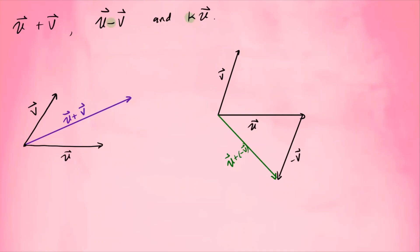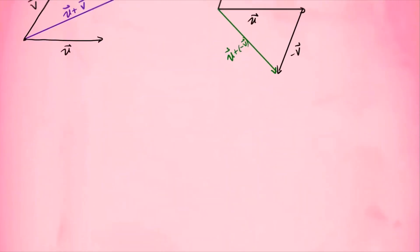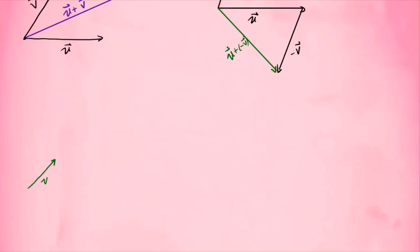The last concept is a scalar k times vector u, which elongates the vector. If k is a positive number like 5, it makes the vector bigger. If k is a small fraction, you can also make it smaller — for instance, 1 over k times vector u. So you can enlarge the magnitude or reduce it. These are the three operations we can do with vectors.